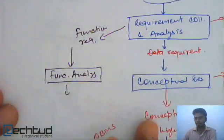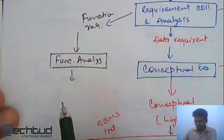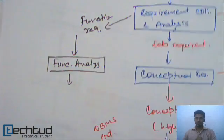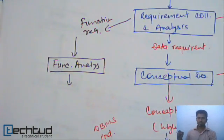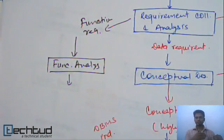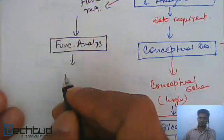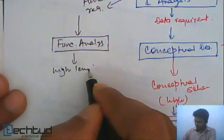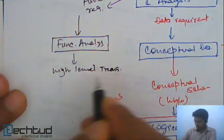Whatever function is required, you try to find out the transactions. For example, once you are sure that a student will be opting a course, you define a transaction: once a student opts a course, there should be an entry in the student-course table with student ID and course ID associated, to maintain that this student has taken this course. All these transactions you will specify as high-level transaction specification.